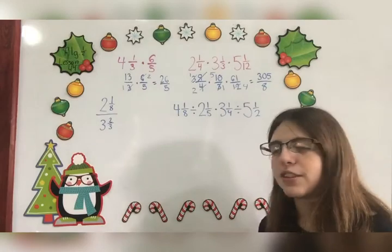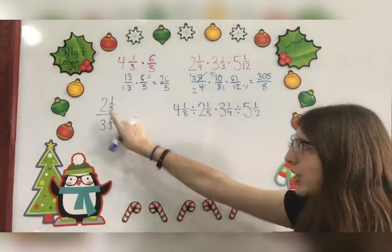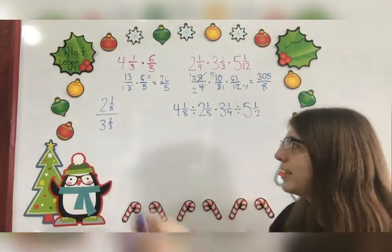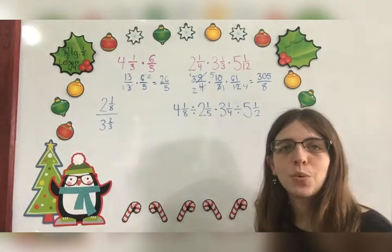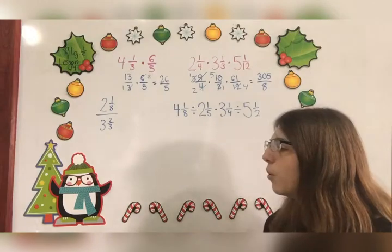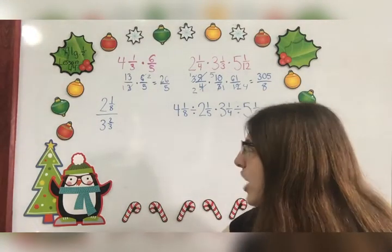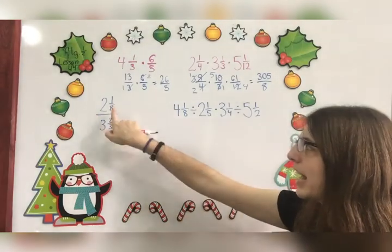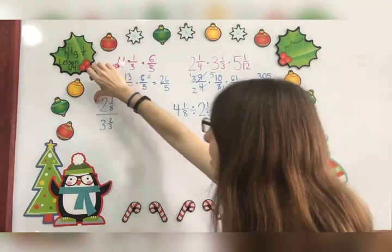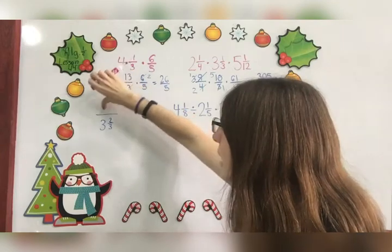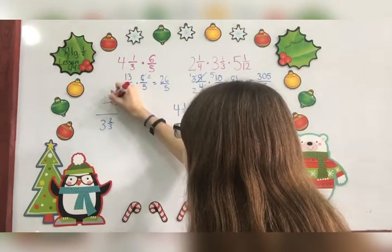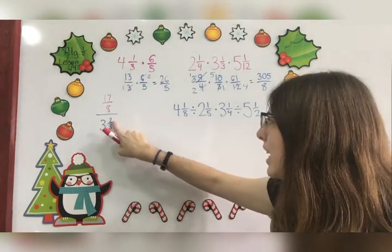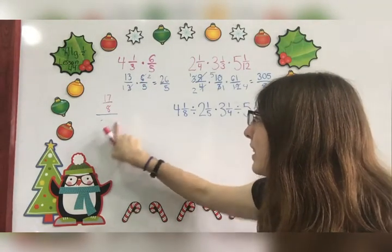Now let's look at division. Remember that the fraction bar means division. So when you see something like this, this means 2⅛ divided by 3⅔. So the first thing that I need to do is change these so that I have improper fractions. 2 times 8 is 16 plus 1 is 17, so that gives me 17/8. 3 and ⅔: 3 times 3 is 9 plus 2 is 11, so that's 11/3.